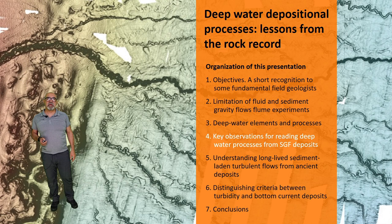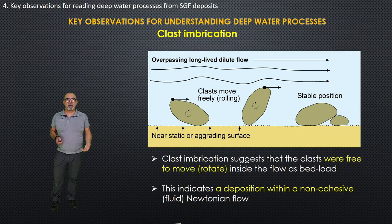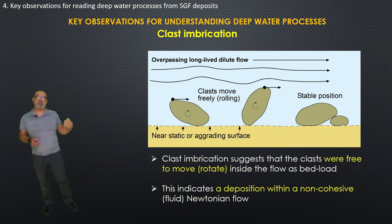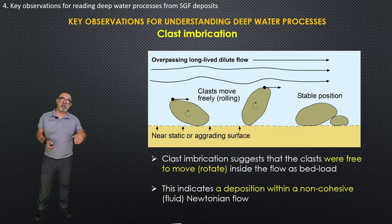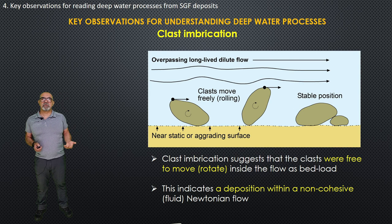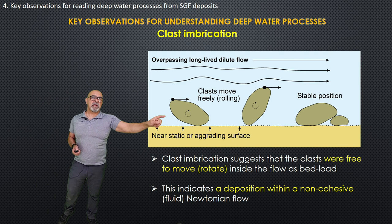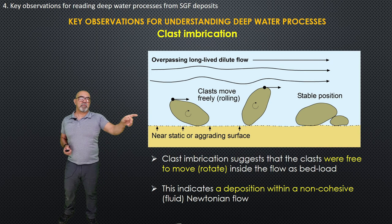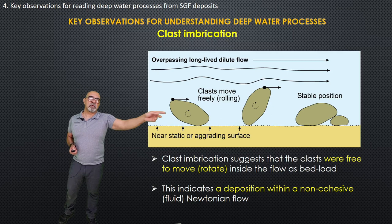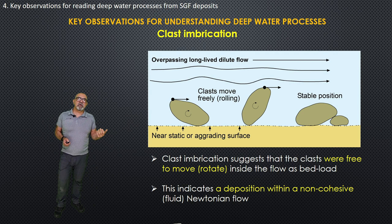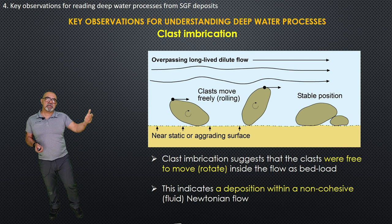The idea now is to discuss some key observations we can read from the rock that are useful to understand depositional conditions in sediment gravity flow. One very important sedimentary structure that is sometimes overlooked is imbrication. For most sedimentologists, imbrication just suggests flow direction — if you have an elongated clast and a current going one way, the clast can rotate into a more stable position. But imbrication also gives another critical piece of information for understanding sediment gravity flow processes: imbrication means that the clast was able to roll, meaning it was free to roll.